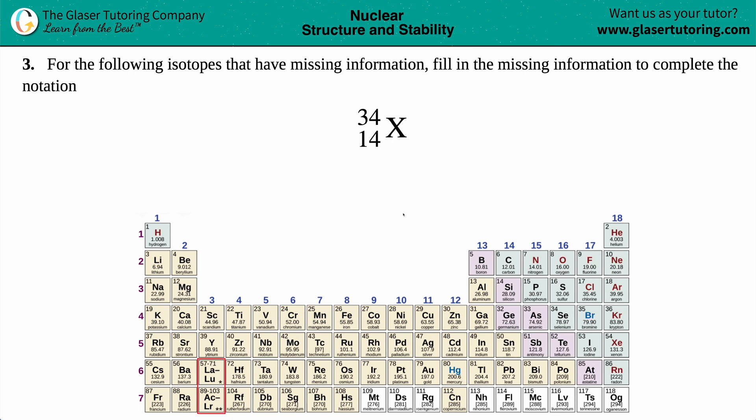Number three: For the following isotopes that have missing information, fill in the missing information to complete the notation. Here's our first example - we have a 34 on the top, 14 on the bottom, and then an X. Just know that X is not an element, so this is the missing information we have to find out.